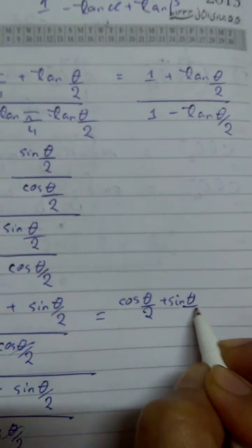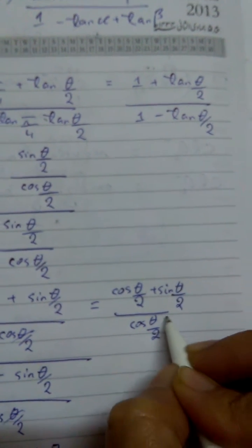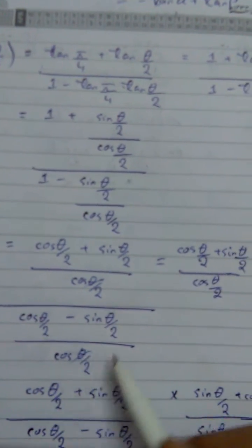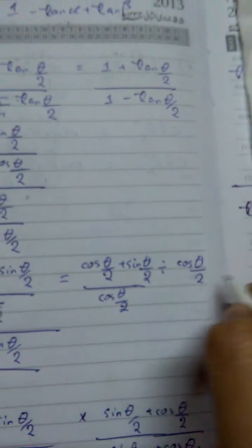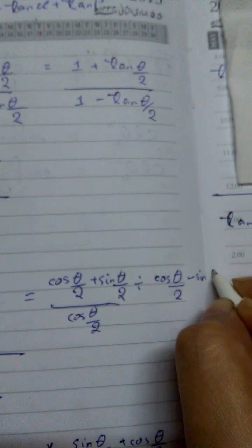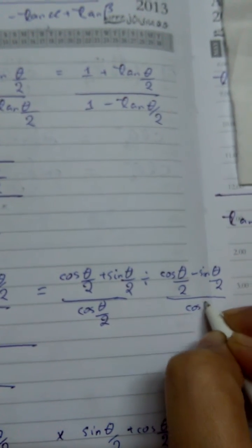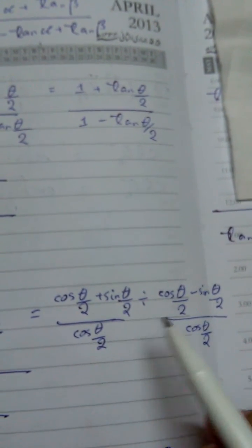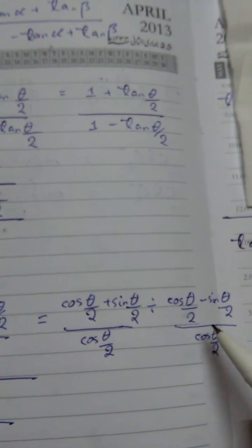Cos θ/2 plus sin θ/2 upon cos θ/2. This thing is actually getting divided with this thing. It's actually this, and once when you convert this division into multiplication, this side is going to be overturned.